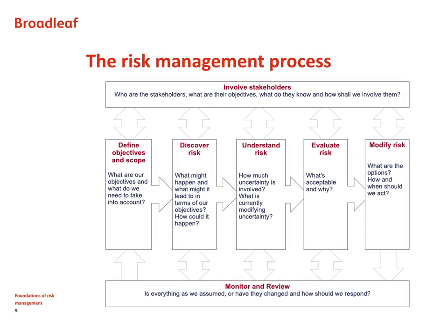This is a diagram of the risk management process, very similar to the diagram in ISO 31000, except we've put the diagram on its side so it fits better on the slide. We start generally by understanding our stakeholders and involving them throughout the whole process. We then start on the central spine of the process by defining clearly what our objectives are and what is the scope of the decision we need to take. This must include looking at external and internal sources of uncertainty.